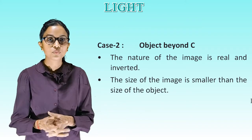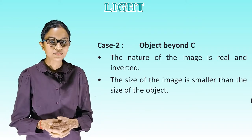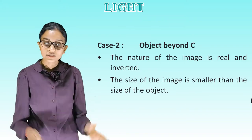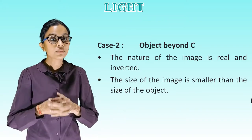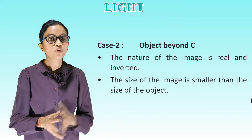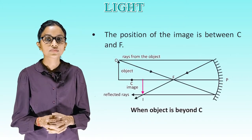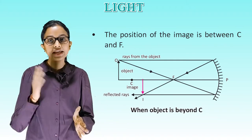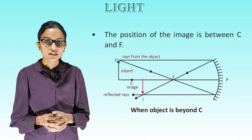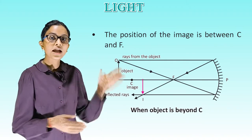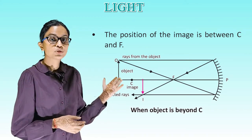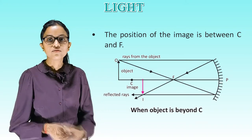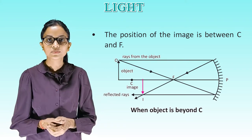Case 2 — object beyond C: the nature of the image is real and inverted. The size of the image is smaller than the size of the object. The position of the image is between C and F. This is the diagram showing the object beyond C.